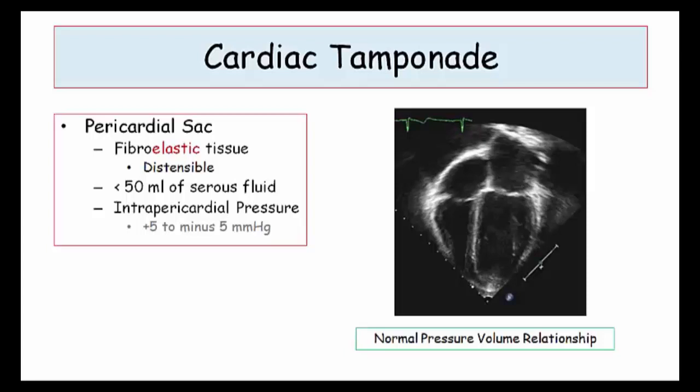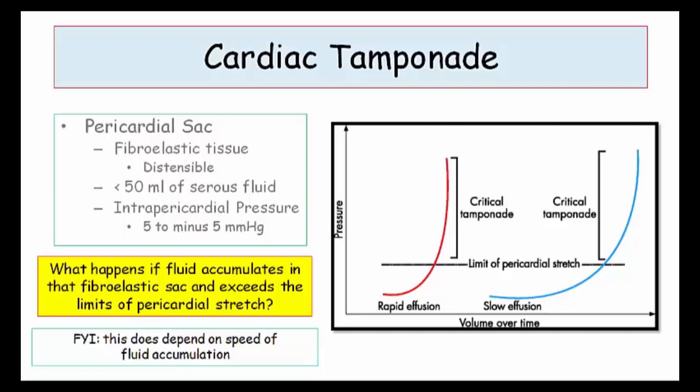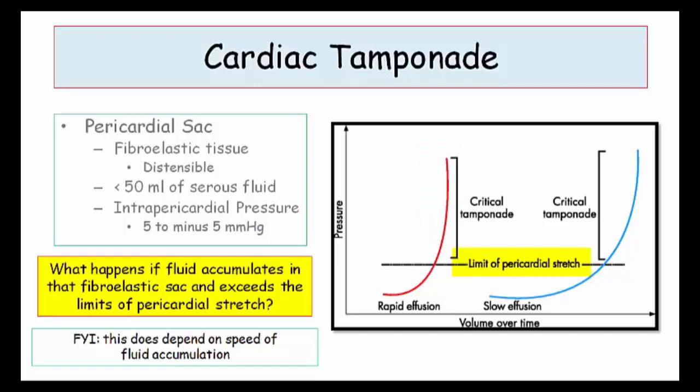The pressure variation with respiration, noted as plus 5 to minus 5, mirrors the normal swing in intrathoracic pressure seen during respiration. Inspiration normally results in a decrease in intrapericardial pressure. So what happens if fluid accumulates in that fibroelastic sac and exceeds the limits of pericardial stretch? The speed of fluid accumulation does impact the clinical presentation. The key point is the rapid vertical rise in intrapericardial pressure once that limit of stretch is reached — it only takes a small volume of additional fluid to convert an innocent pericardial effusion into a disastrous hemodynamic catastrophe.